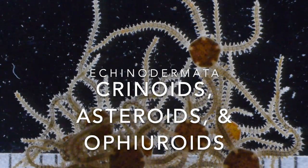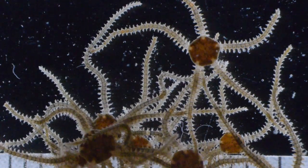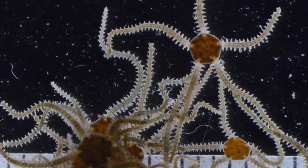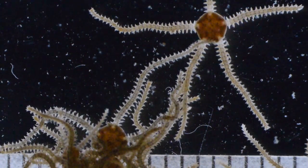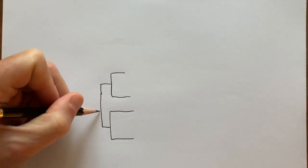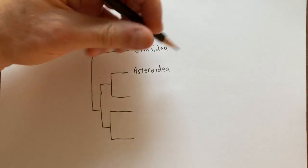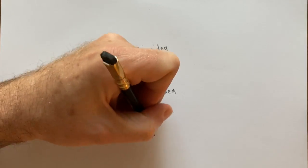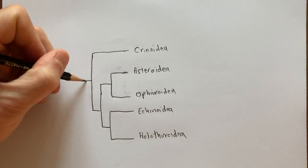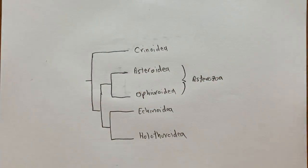These little animals are members of one of the three major clades of living echinoderms covered in this video, with focus on asteroids and ophiroids since living crinoids are not easily accessible. There are actually five major clades of living echinoderms; the remaining two will be covered in another video. Crinoids are sister taxon to the remaining living echinoderms. The asteroids and ophiroids form a clade called Asterozoa, and the echinoids and holothuroids form a clade called Echinozoa.